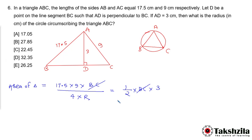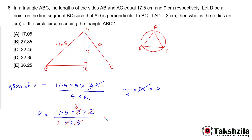So we are left with finding r. The value of r is going to be: 17.5 × 9 × 2, divided by 4 × 3. Let's solve this: 17.5 × 9 × 2 divided by 12. This gives 17 × 3 = 51, plus 1.5 = 52.5, divided by 2, which equals 26.25. So the answer to this question is option E.